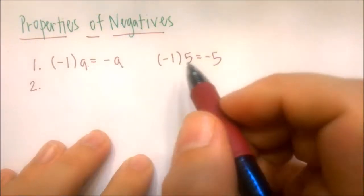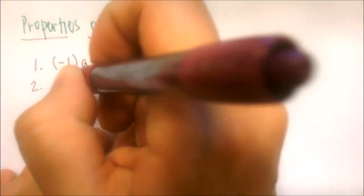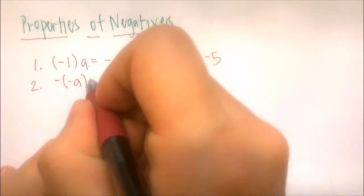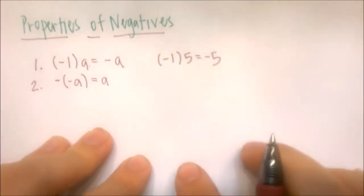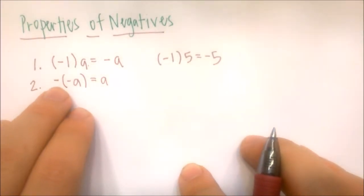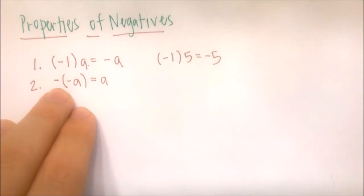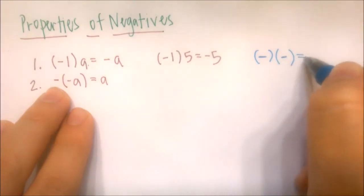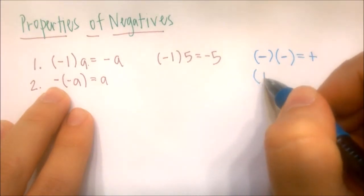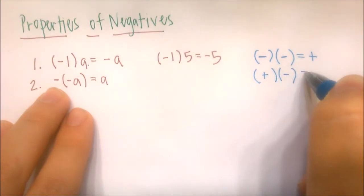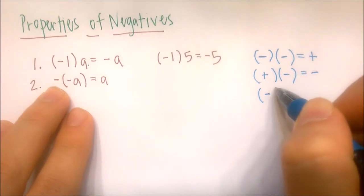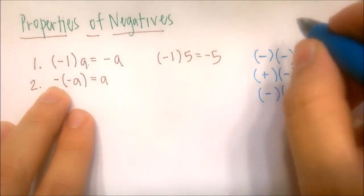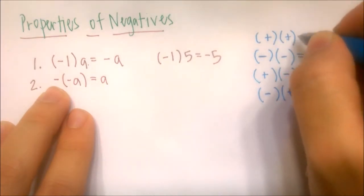The second property is negative negative a. If we have the negative of a negative a, we just get a, where a is any real number. We can write these rules out: a negative multiplied by a negative gives a positive. A positive multiplied by a negative gives a negative, and vice versa since multiplication is commutative. And a positive multiplied by a positive gives a positive.